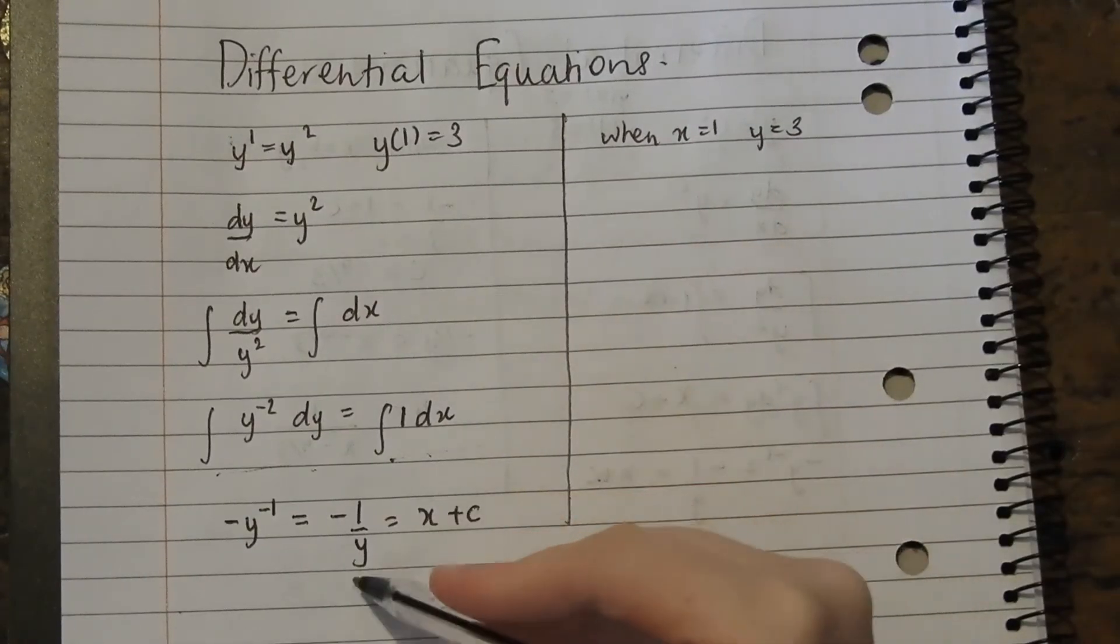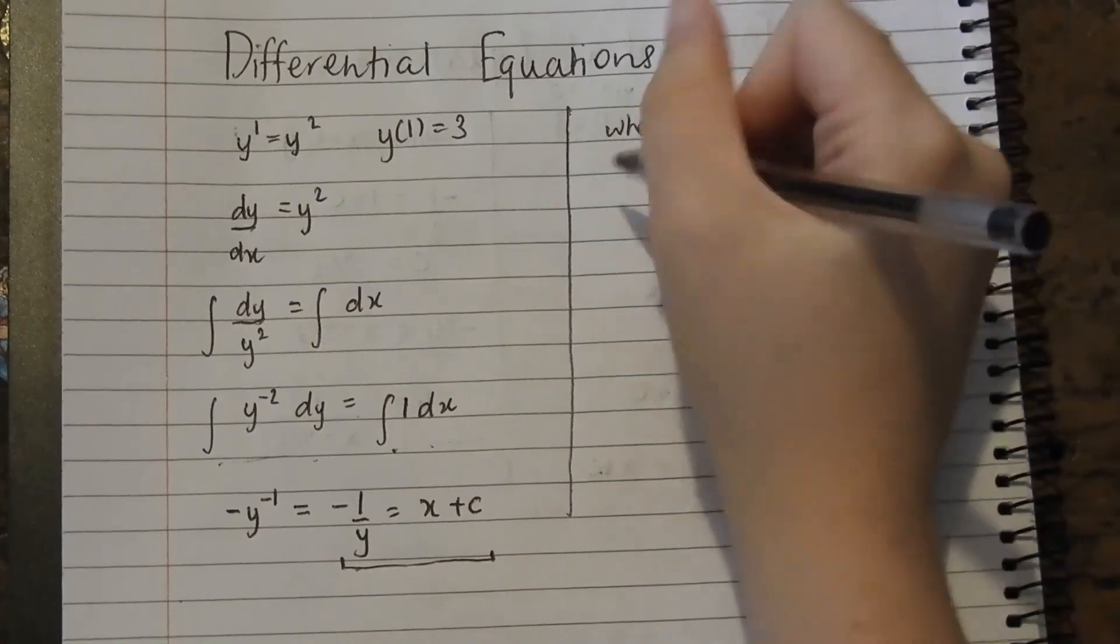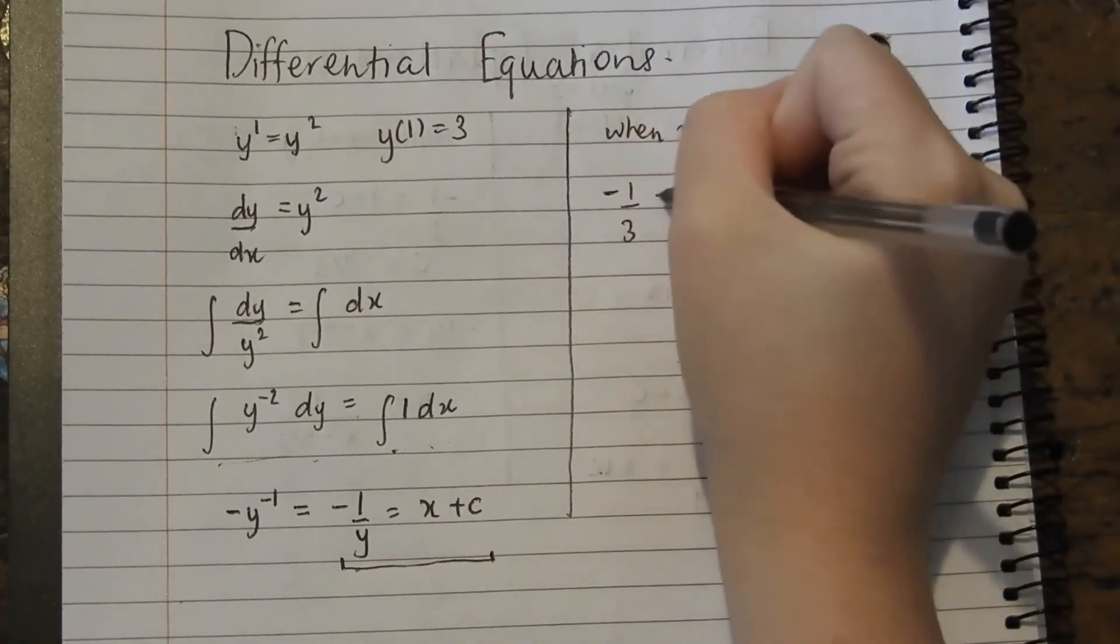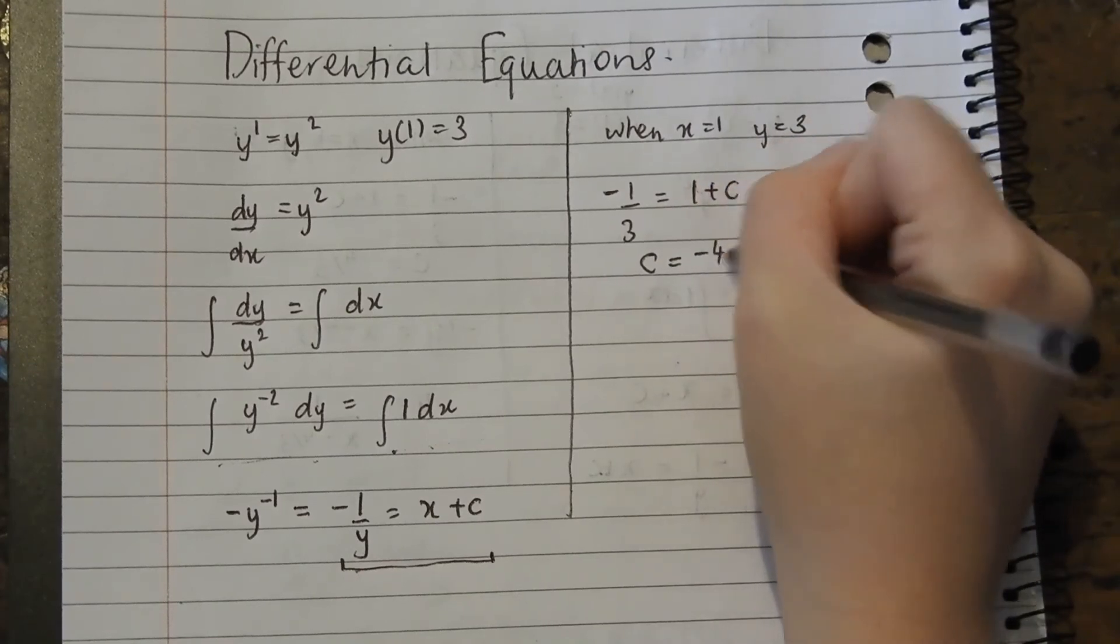So substituting these values into this equation, this one here, we get negative 1 on 3 equals 1 plus c. Rearranging for c, we get negative 4 on 3.